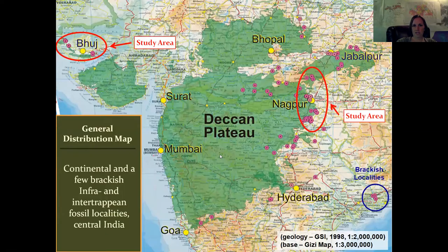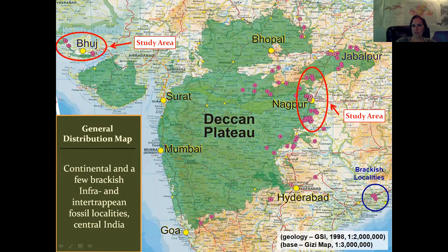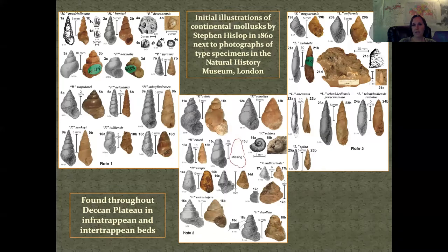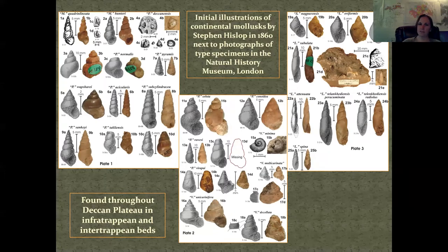Here again, the green is the Deccan Traps themselves — the Deccan Plateau. All these little purple dots are all the mollusk localities that have been reported in any paper ever. I only looked at these in the Nagpur area and then went into the Western Ghats for comparison. These are the plates done by Stephen Hislop — his paper from 1860 — he was pretty much the first and only one to ever look at these fossils. The black-and-white illustrations are his originals; we went to England to photograph the type specimens, which are shown on the right.